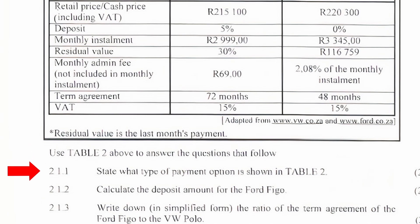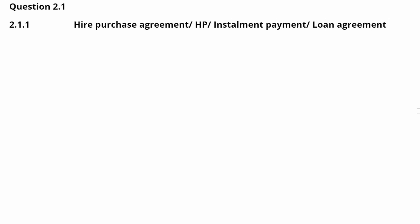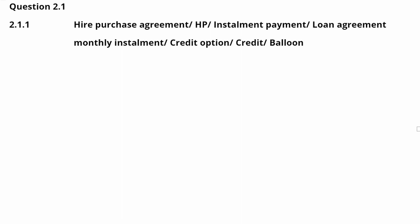Question 2.1.1: State what type of payment option is shown in Table 2. Any one of the following answers is correct: a hire purchase agreement (HP), installment payment, loan agreement, monthly installment, credit option, credit, balloon payment option, or residual payment option.